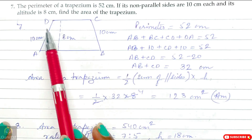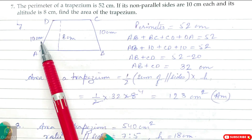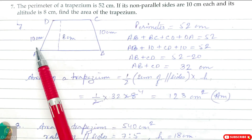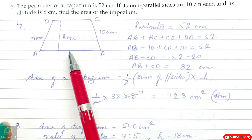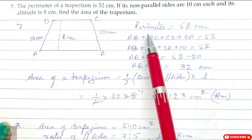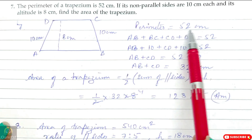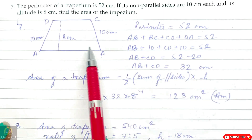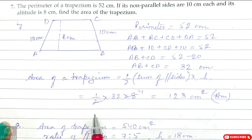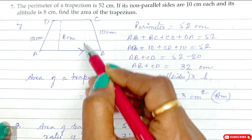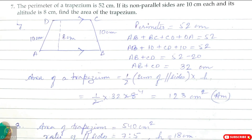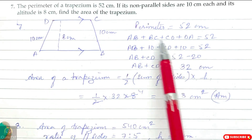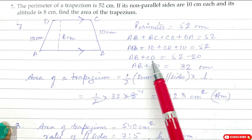The non-parallel sides AD and BC are 10 cm each, and the altitude or height is 8 cm. The perimeter given is 52 cm. We have parallel sides AB and CD whose lengths we need to find.